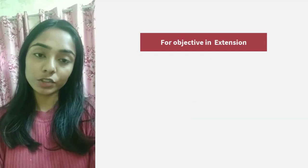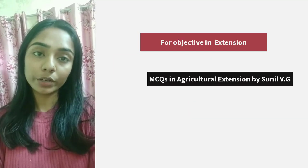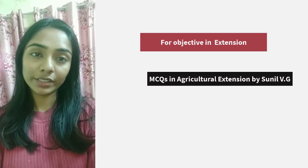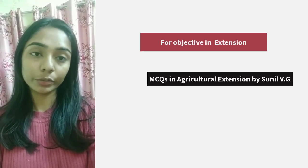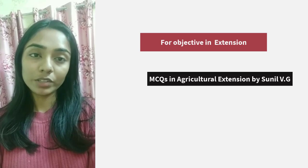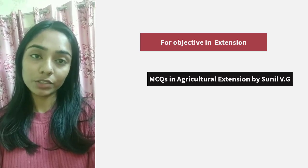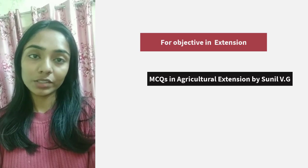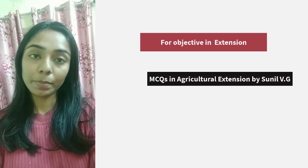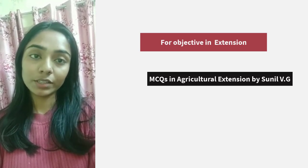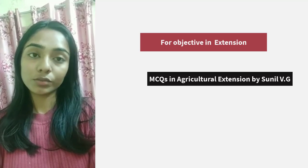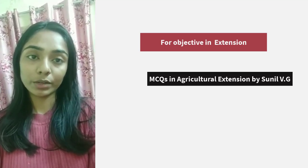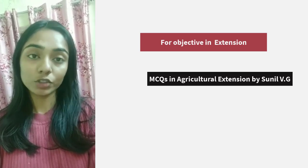For extension objectives, solve the book by Sunil VG. It contains a good amount of questions — around 400 in each unit. However, not all questions are for us; some are for PhD students, so skip those questions and don't waste your time on those concepts. Only solve questions from the concepts you find in G.L. Rae and Shruti.